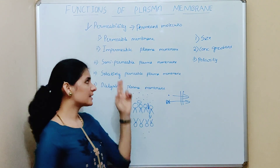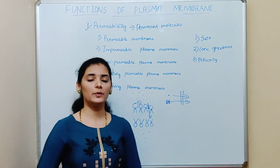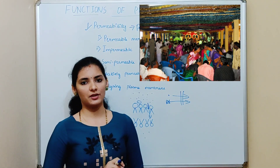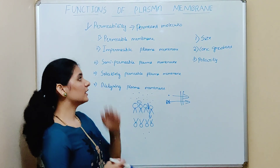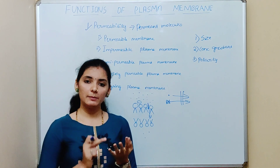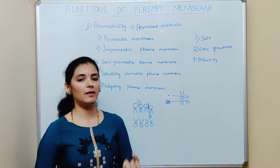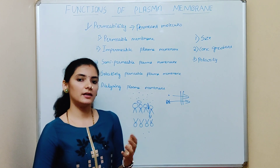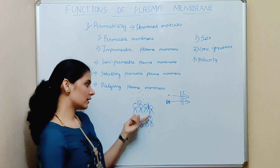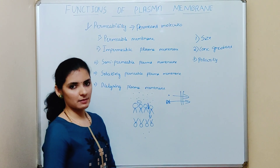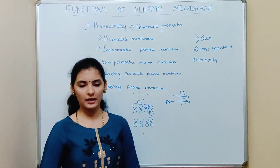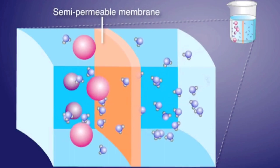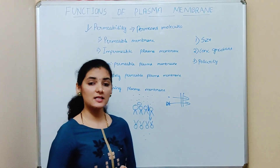The third type is the semi-permeable plasma membrane. 'Semi' means half. This can be compared to a marriage function where only invited people can come. Similarly, only certain molecules can pass through this membrane — mainly gases, water molecules, and small molecules can easily pass, and it is mainly based on the size of the molecule. Larger molecules, charged particles, or polar molecules cannot pass. The example for this semi-permeable plasma membrane is the plasma membrane of root cells in a plant.